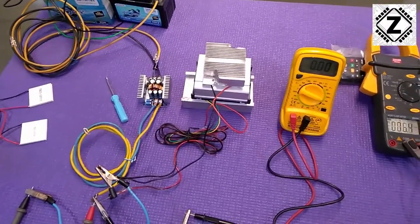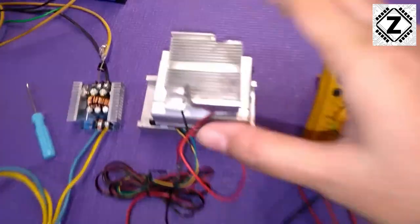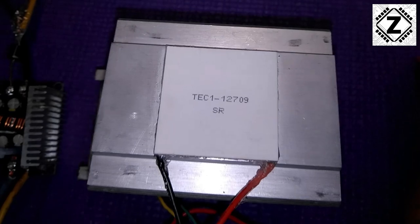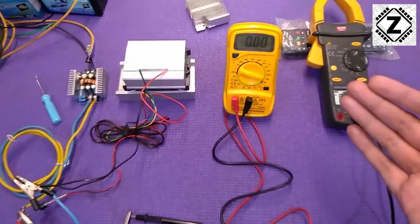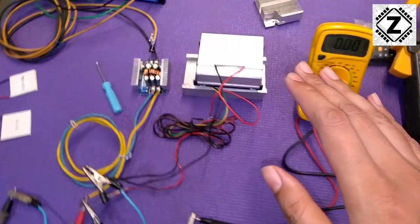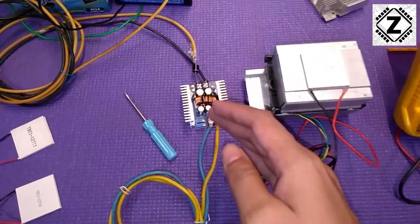Hey guys, hello and welcome to Zen Innovations. Today I was playing with this 9 amp Peltier module and I thought, why not make a voltage versus amperage chart for you guys? Basically, we're going to provide a variable voltage using this DC to DC buck converter to this 9 amp Peltier.